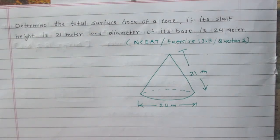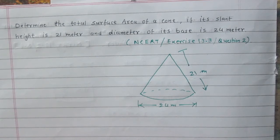We are given a cone with its dimensions, its slant height 21m and base diameter 24m, and we are to find the total surface area of the cone.